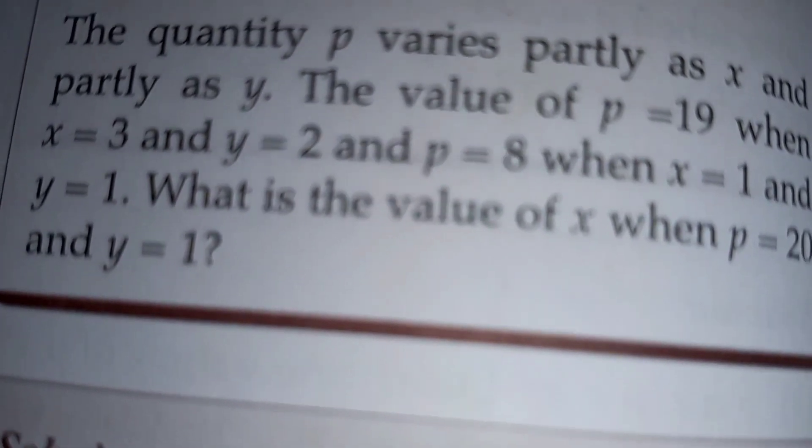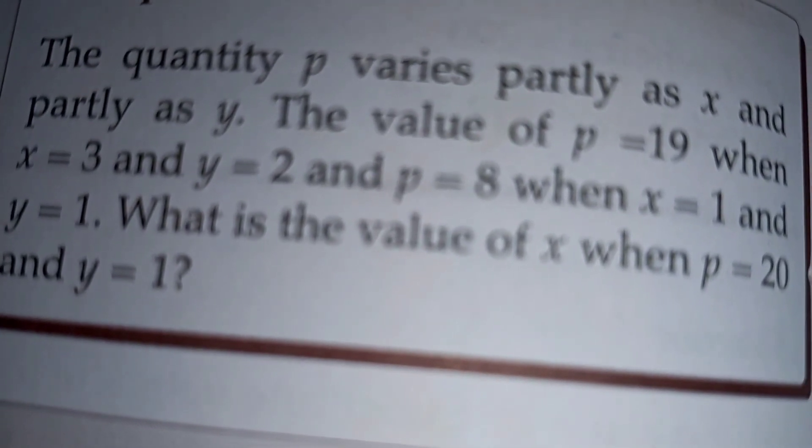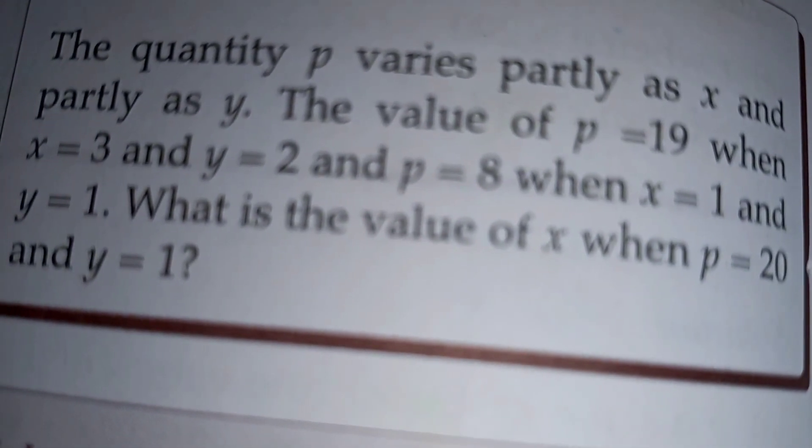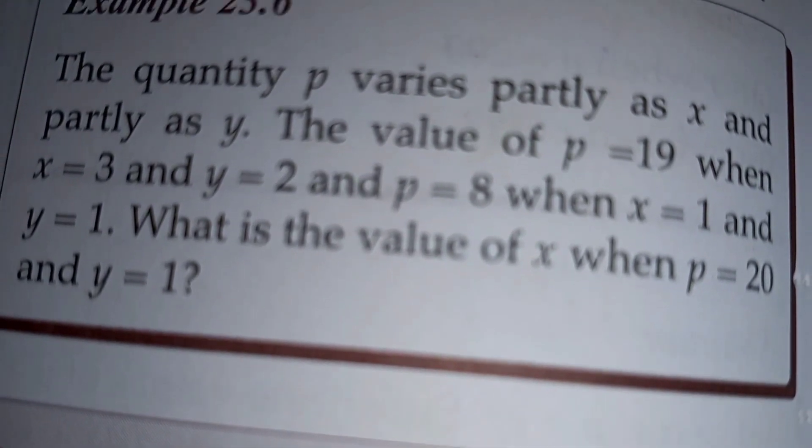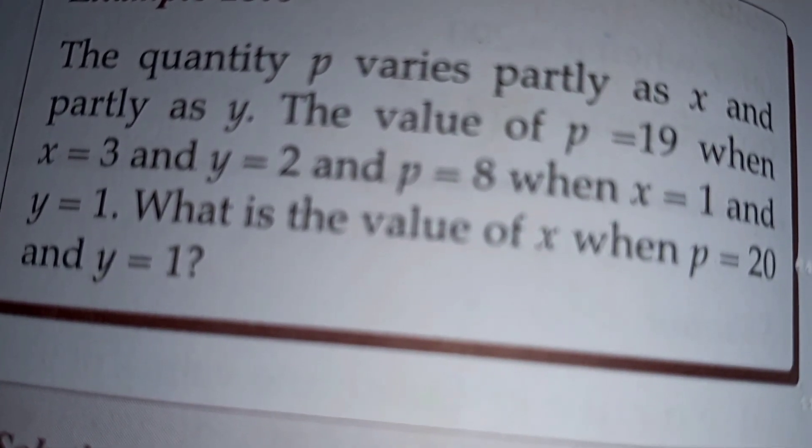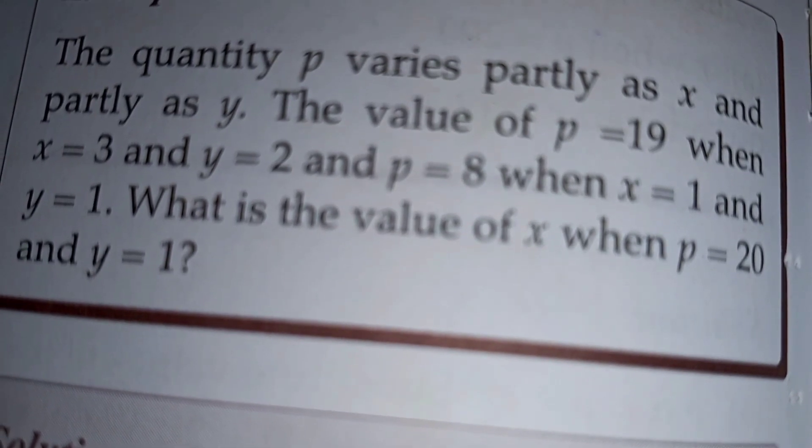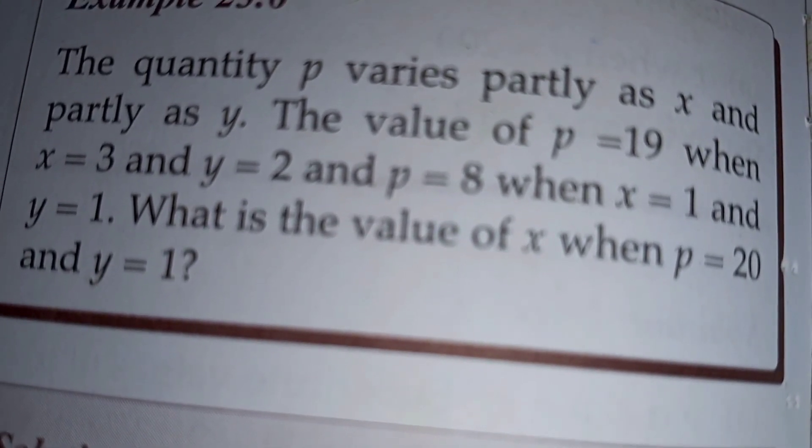We are told quantity P varies partly as X and partly as Y. The value of P is equal to 19 when X is 3 and Y is equal to 2. And the value of P is equal to 8 when X is equal to 1 and Y is equal to 1.